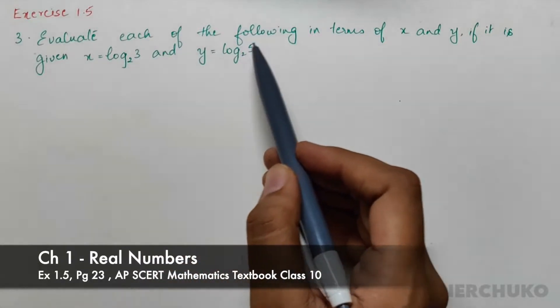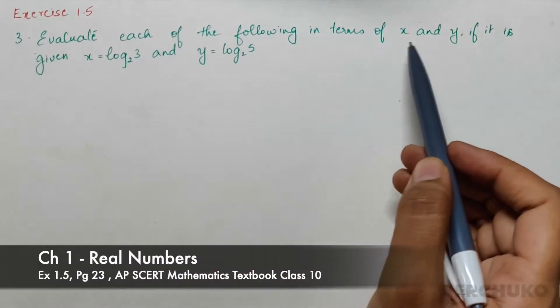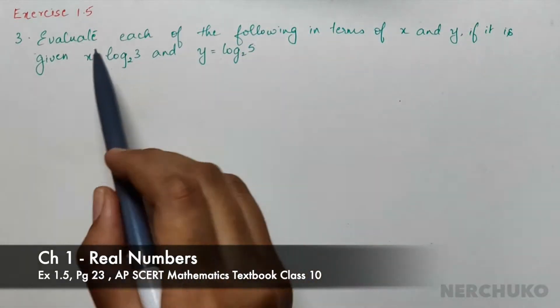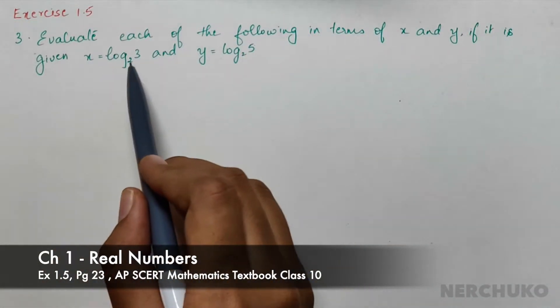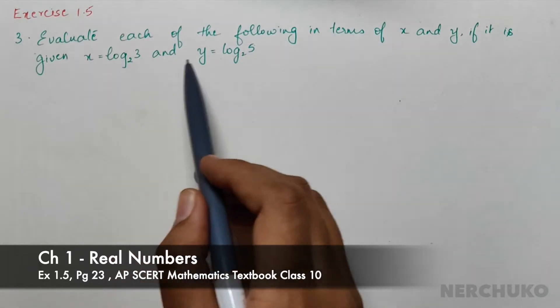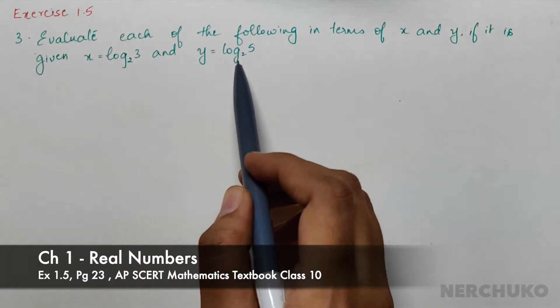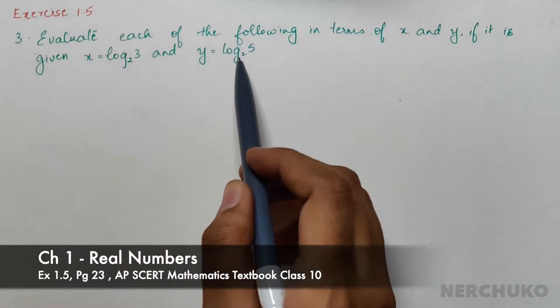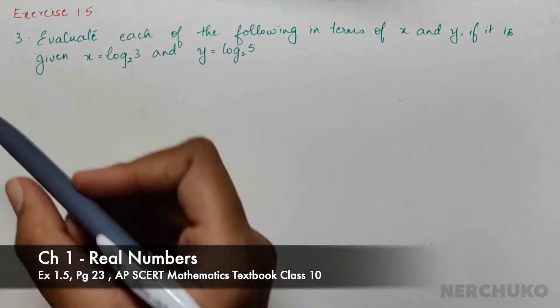Evaluate each of the following in terms of x and y, given x equals log 3 to base 2 and y equals log 5 to base 2.